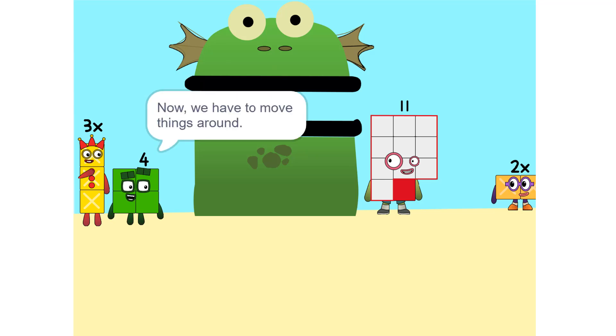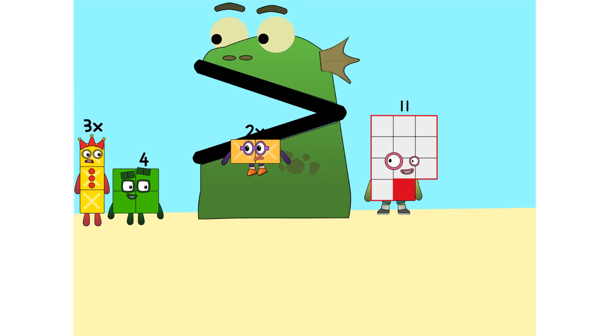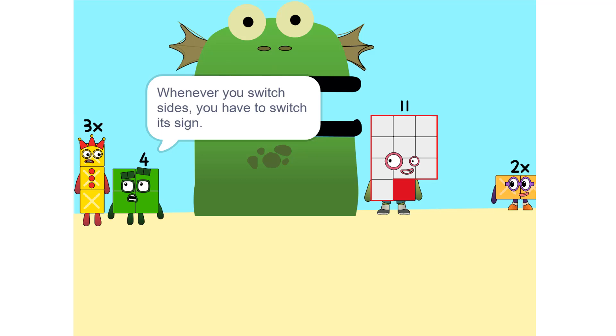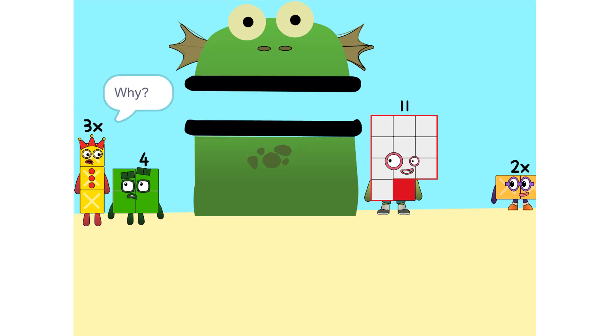Yeah. Now we have to move things around. We have to move this 2x to this side. 5x. Whenever you switch sides, you have to switch its sign. So if it's positive, it becomes negative and vice versa. Why?